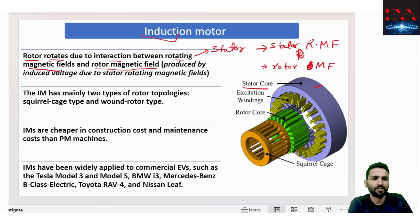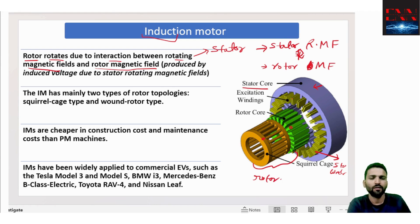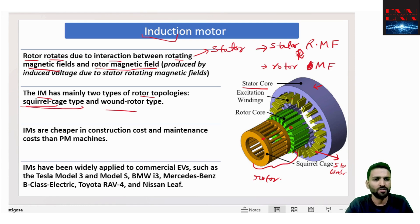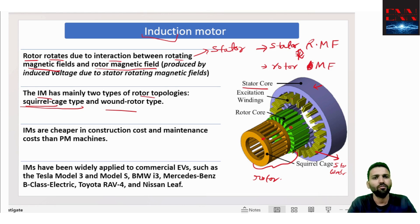There is a stator core, stator winding — the yellow part. The green and the copper-colored part together constitute the rotor. Most of you are from an electrical background, so I am not going deep into the induction motor. This is basically the squirrel cage induction motor. There can be two types of rotor topology: squirrel cage type and wound rotor type. We will be focusing on the squirrel cage type shown in the figure.